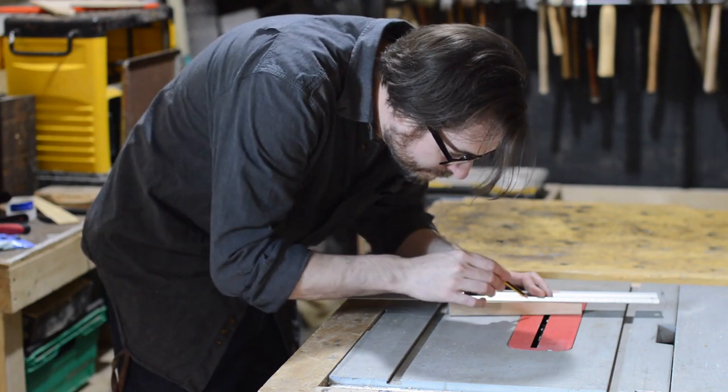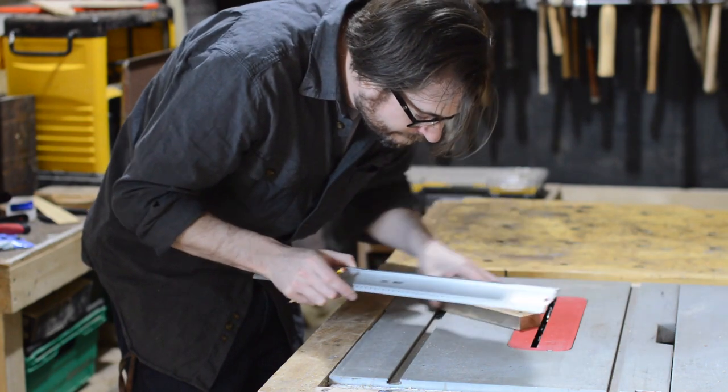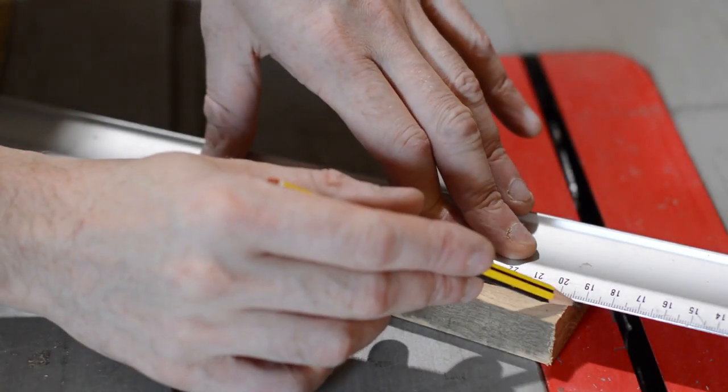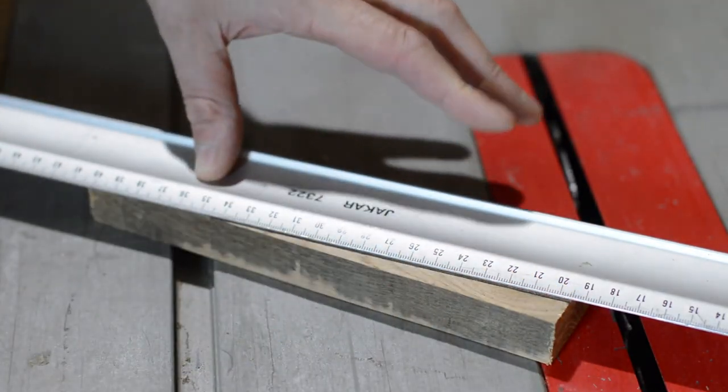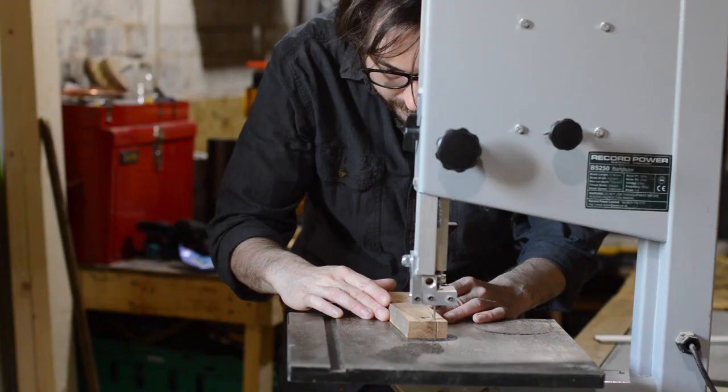I want the shape to be a little more interesting than just a block of wood, so I'm going to add a taper to the handle. I mark out where I want the taper to go, and then I can take it over to the bandsaw and cut it out.